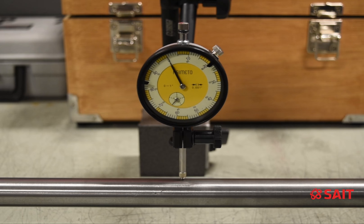There we see the total indicated deflection of the shaft. In this case we have about two and a half thou, maybe almost three.